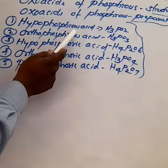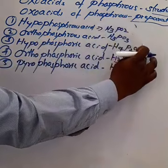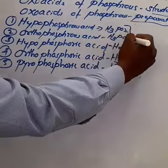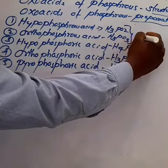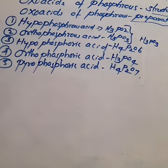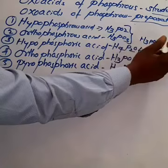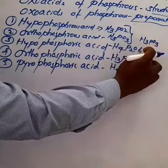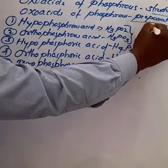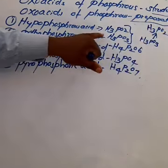Before learning the formula for hypophosphorous acid, we first need to know the phosphorus acid formula. Phosphorus acid, otherwise called orthophosphorous acid, has the formula H3PO3. If we remove one oxygen from H3PO3, the formula becomes H3PO2 - that is hypophosphorous acid.